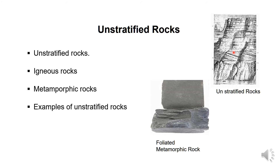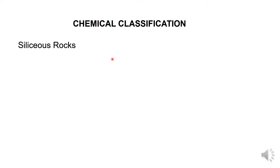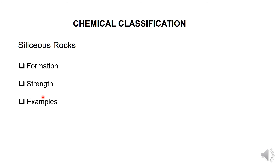Foliated rocks are the repetitive layers in metamorphic rocks. Non-foliated metamorphic rocks are typically formed in the absence of pressure. The chemical classification includes siliceous rocks, with silica as the principal constituent. These stones are durable in strength and long-lasting. Examples of siliceous rocks are granite, quartzite, and sandstone.